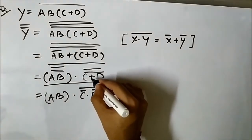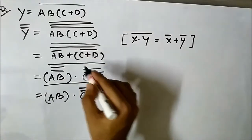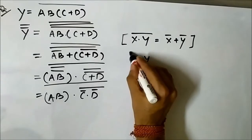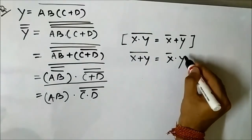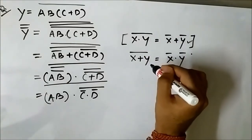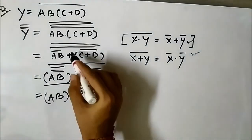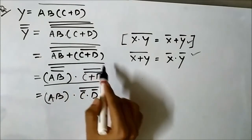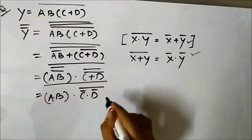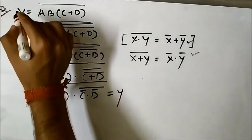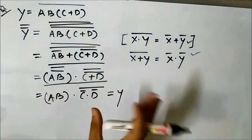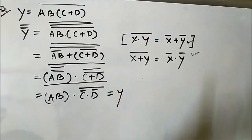Here we used De Morgan's law to convert the OR into AND: X OR Y whole complement gives us X complement · Y complement. This is the second De Morgan's law. The first De Morgan's law converts AND into OR, and the second converts OR into AND. We use this law here to convert this OR into AND, and again here for C plus D whole complement to convert this OR into AND. This is the final modified Boolean expression. The original expression Y and the modified Y are the same, but now it is in product form — AND form — so it can be easily implemented using NAND gates.